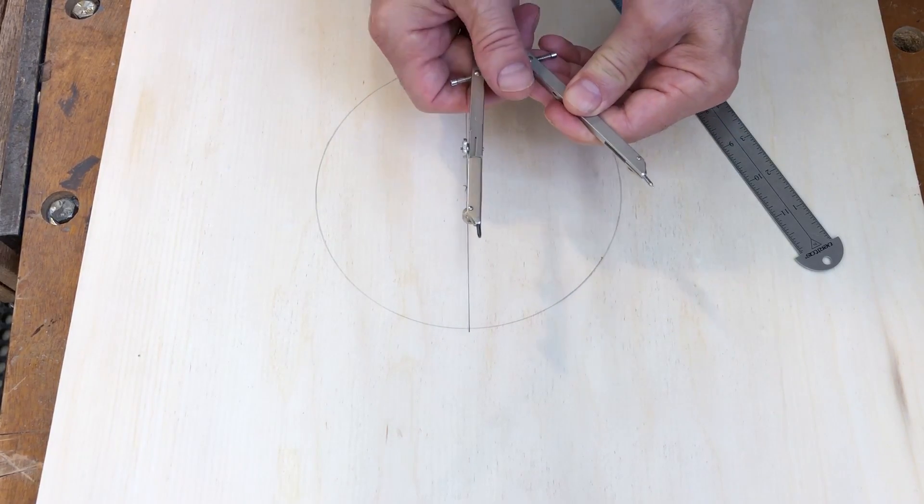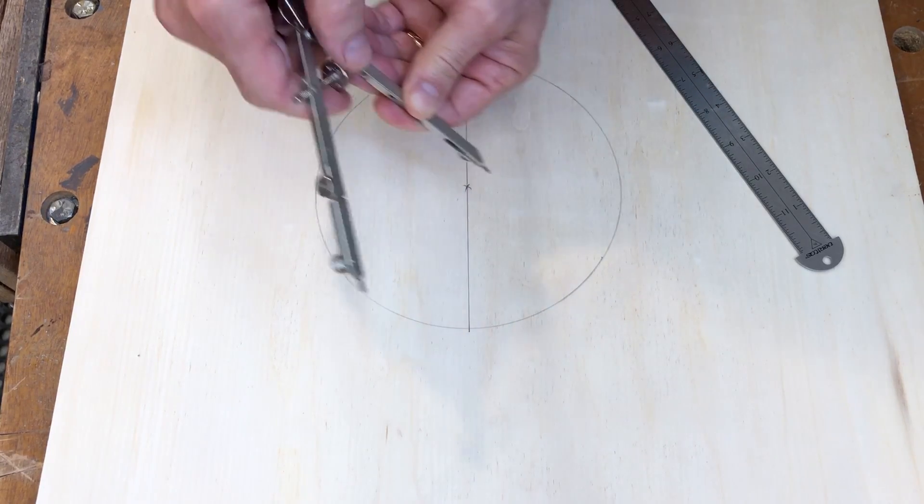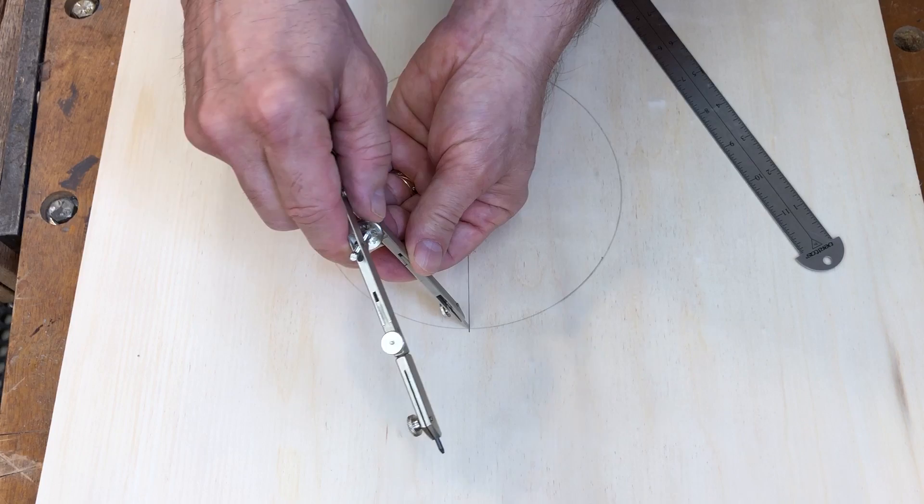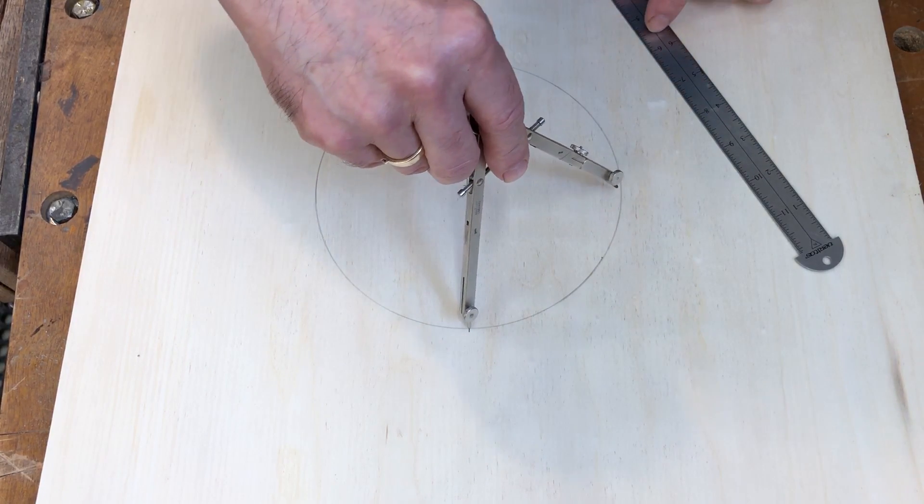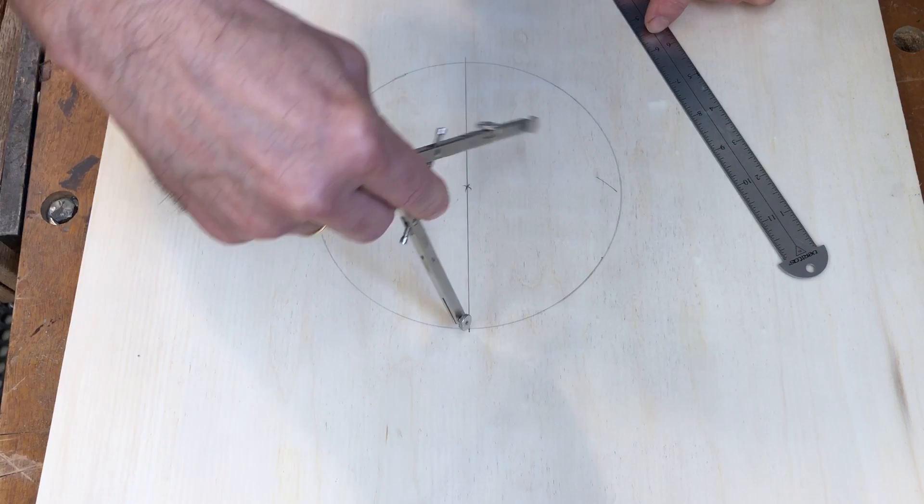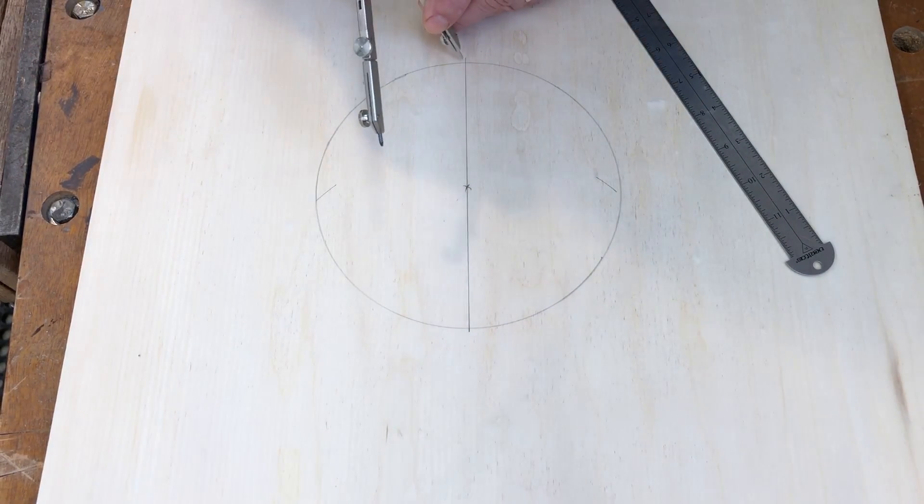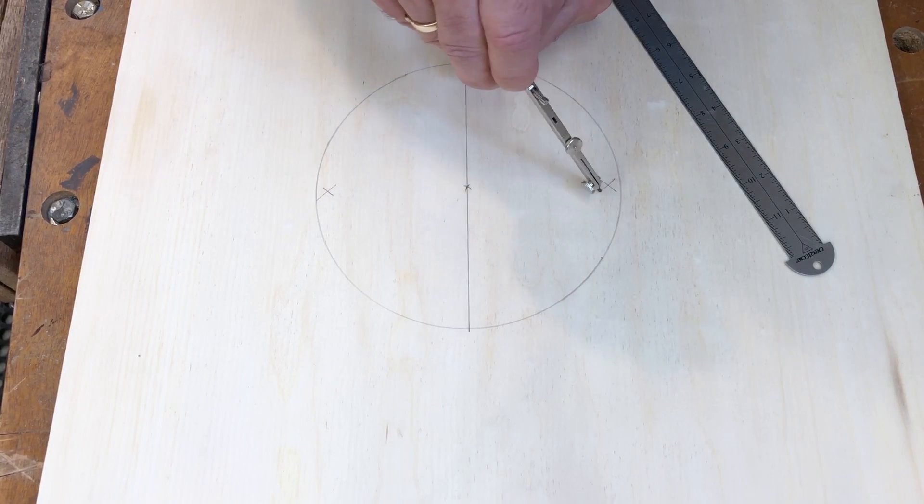Now the trick is just to expand the compass a little bit. Actually, the more the better, but you don't have to go overboard on this. Then take the compass, put the point at the intersection of your diameter and the circle, and then just draw an arc on both sides. Then come down here to this point, do the same thing, and those two lines will intersect.